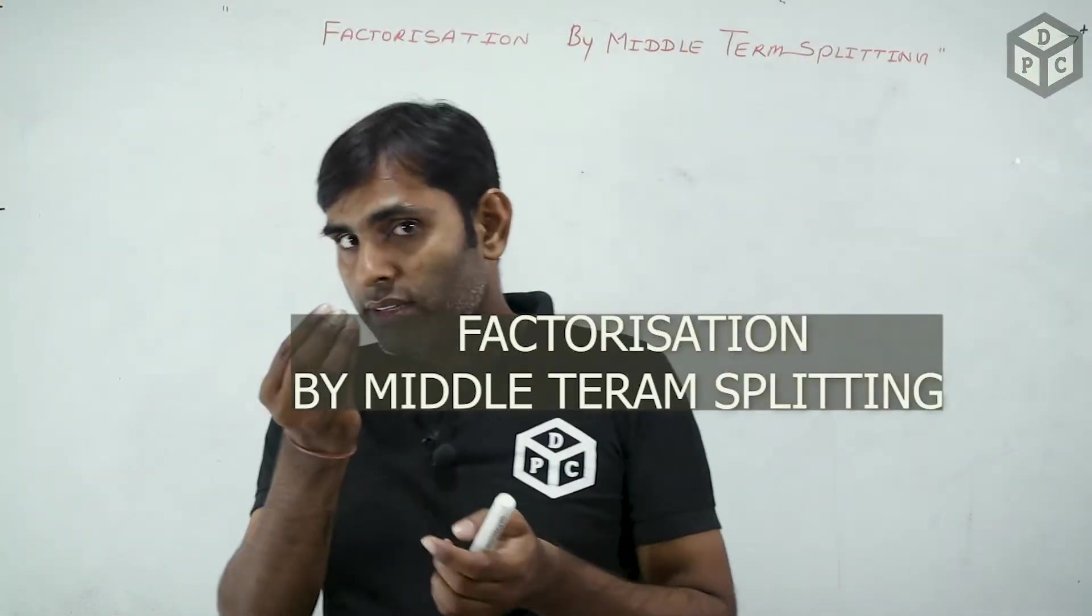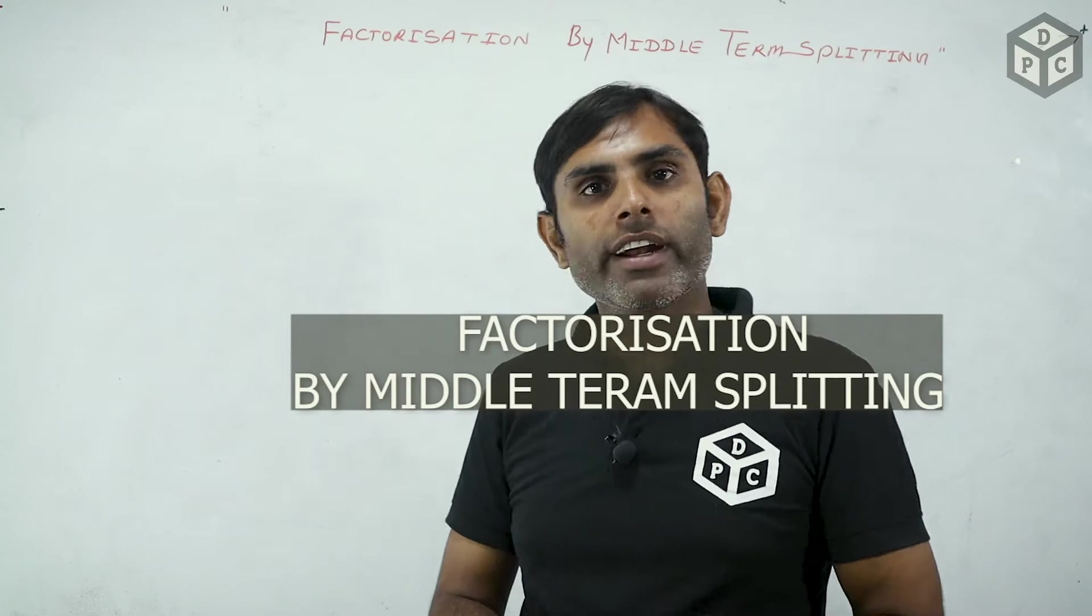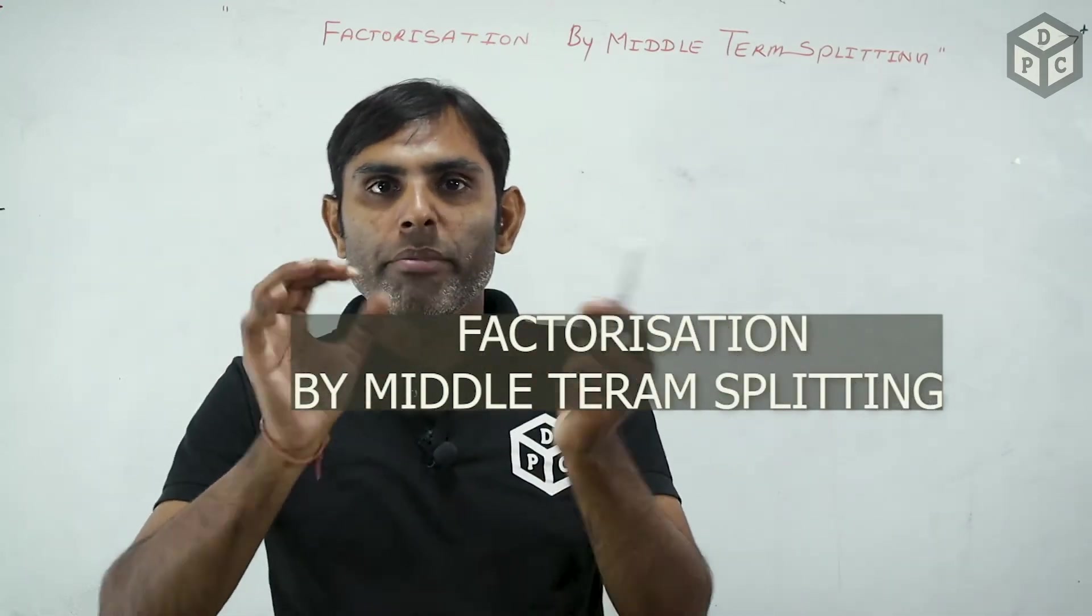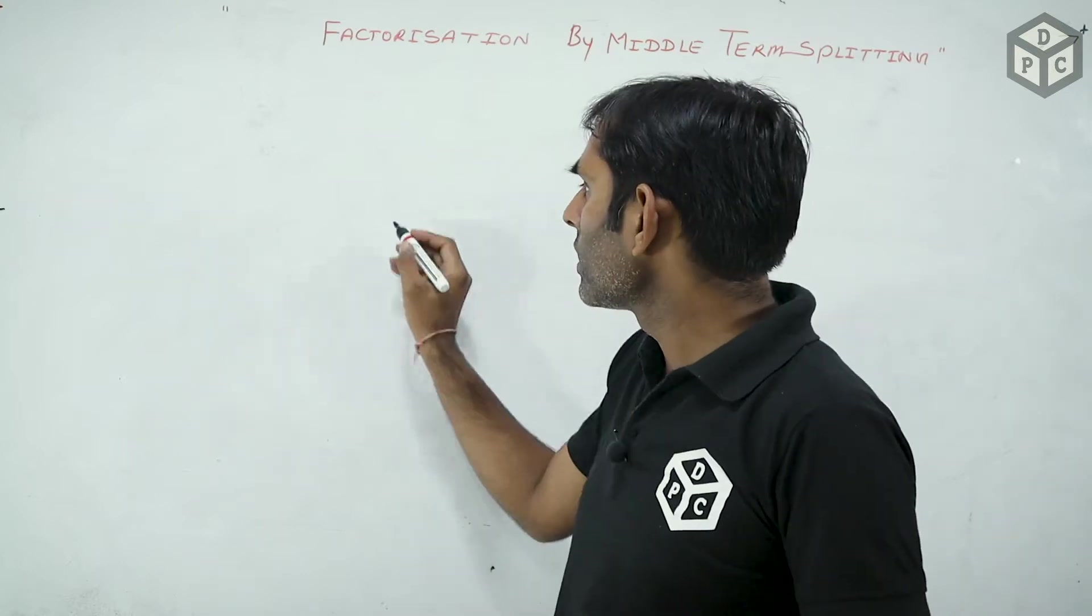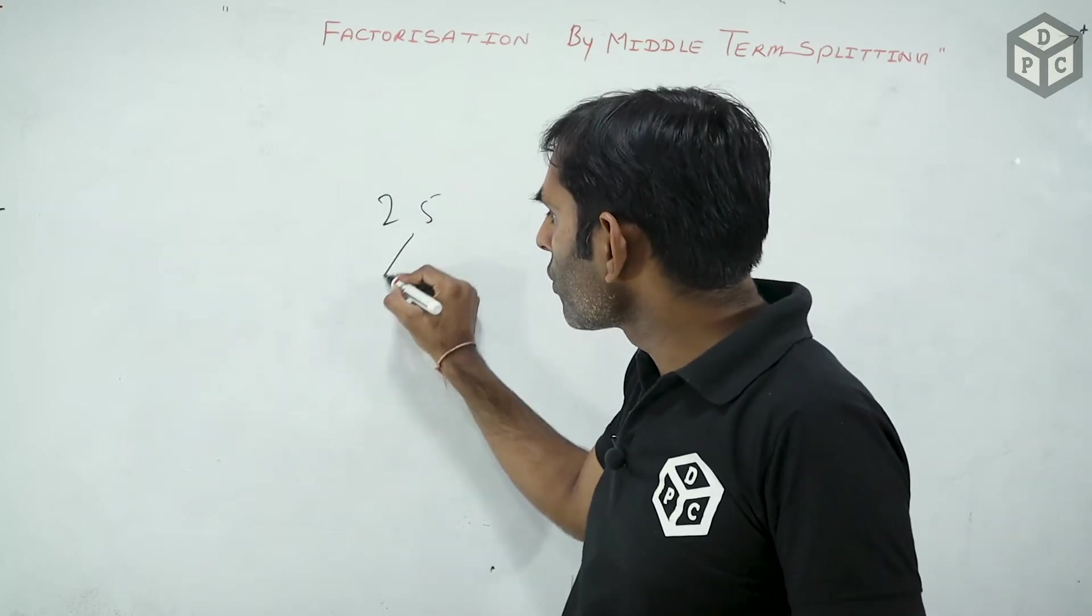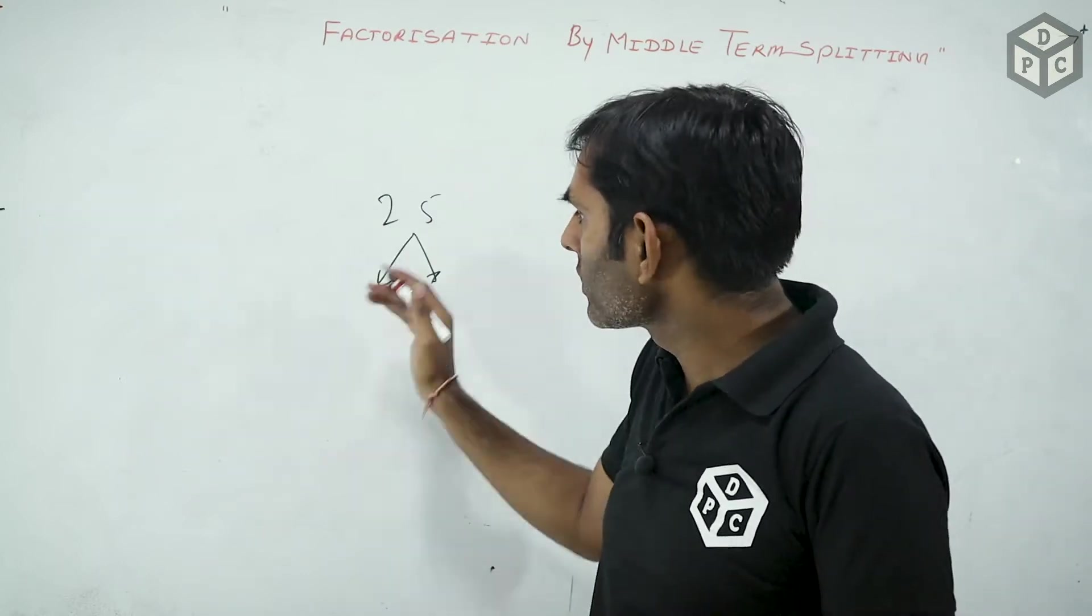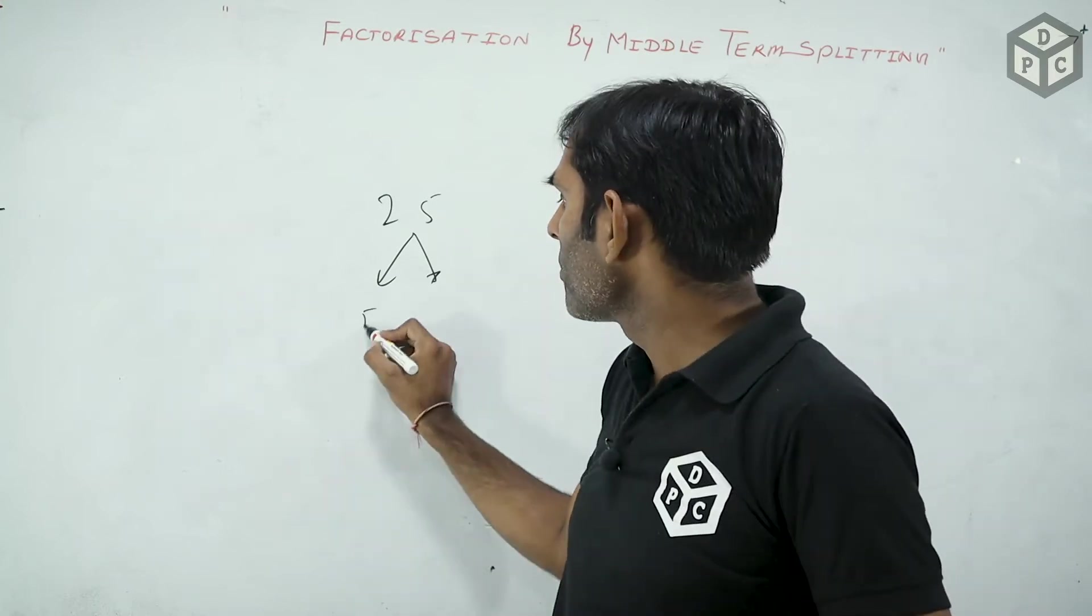Factorization friends, a simple topic is factorization. Factorization means to break someone's. But in mathematics, in numerical numbers, like this number 25, you can break it in the numbers form. In the form of product, it's 5 into 5.